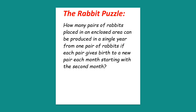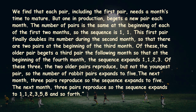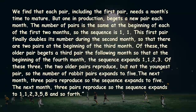Have you figured it out? The answer is the Fibonacci series. We find that each pair, including the first pair, needs a month's time to mature. But once in production, it gives birth to a new pair each month. The number of pairs is the same at the beginning of each of the first two months, so the sequence is 1 and then 1. This first pair finally doubles its number during the second month, so that there are two pairs at the beginning of the third month.